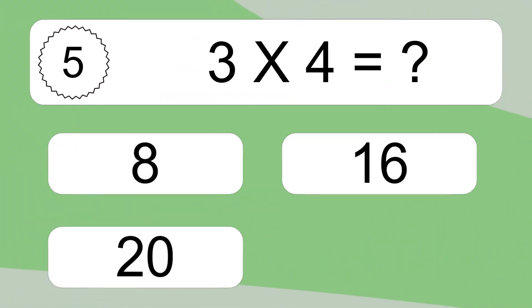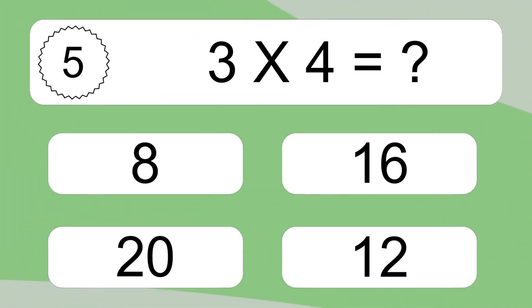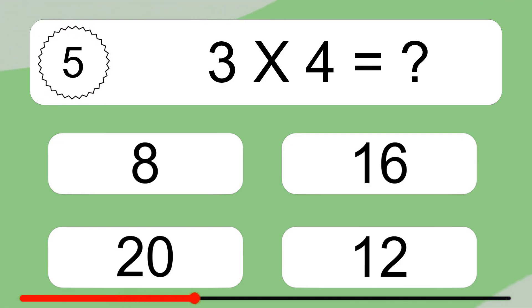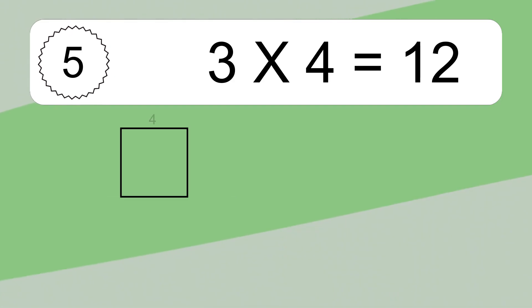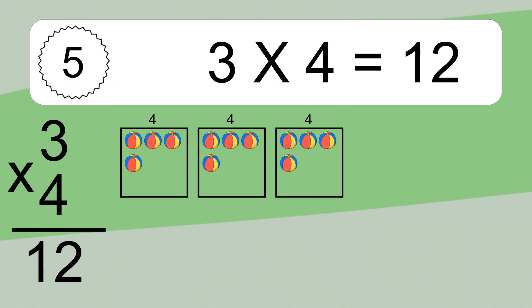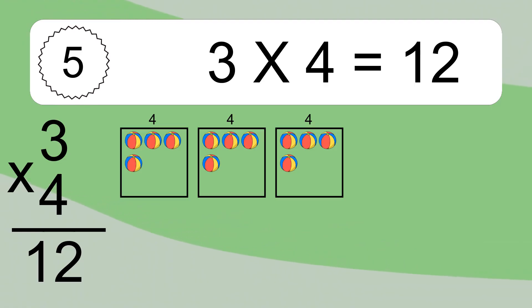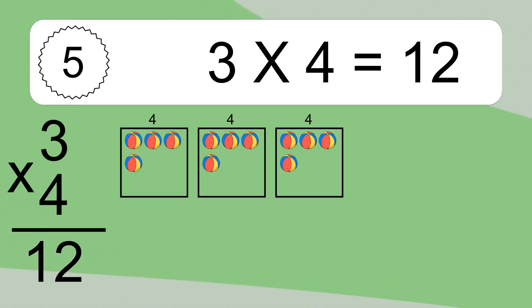3 times 4 equals what? We have 3 boxes, and each box has 4 colorful balls inside. 3 times 4 equals 12.